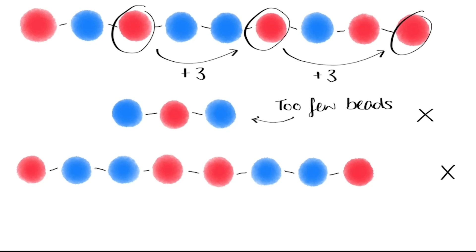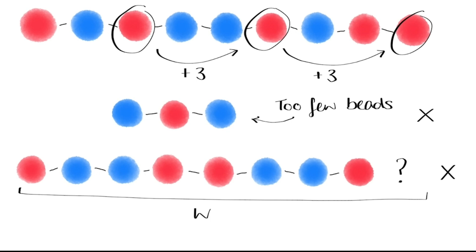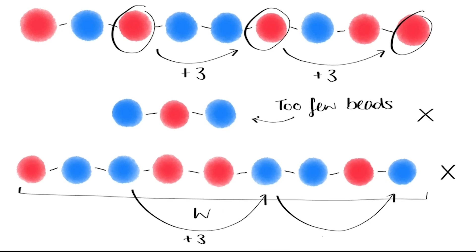Or is there some large number W, such that whenever we have at least W beads, we can guarantee to find three of the same colour evenly spaced? Perhaps eight beads are still too few, but whenever we have 20 beads, for example, there will always be three that are evenly spaced the same colour.